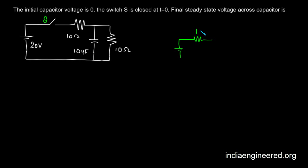So we can redraw the circuit. We have the 10 ohm resistor and we have the capacitor here, 10 ohms, 20 ohms. We have to find out what is the potential across this open circuit. That will be the final steady state voltage across the capacitor.